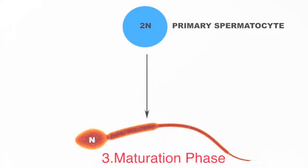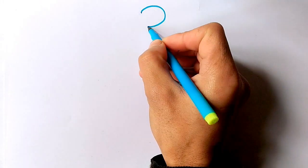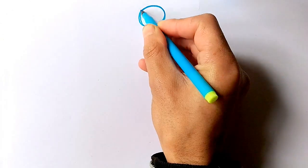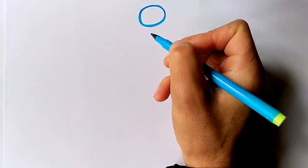In the last stage of spermatogenesis — the maturation phase — the primary spermatocyte matures into spermatids, and these spermatids ultimately grow into spermatozoa through the process of spermiogenesis. Now let's discuss spermatogenesis in detail.